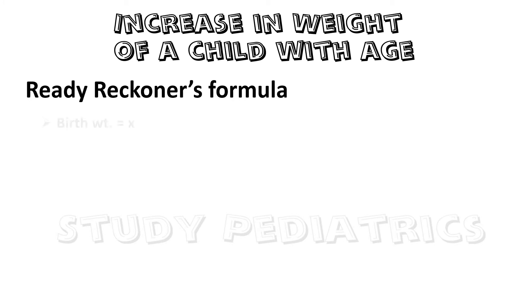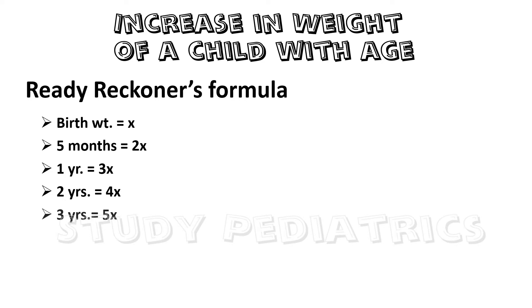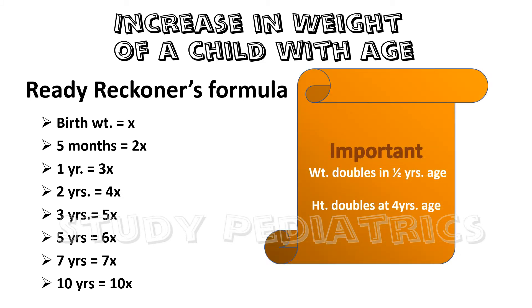Coming to the simple day-to-day Ready Reckoner formula: if birth weight is x, then at 5 months the baby weighs approximately 2x, at 1 year 3x, at 2 years 4x, at 3 years 5x, at 5 years 6x, at 7 years 7x, and at 10 years 10x. This gives a rough estimate of a child's growth with respect to age. Charting growth on a growth chart is the gold standard, but these formulas give an idea of the child's present condition. Do remember that weight doubles in 5 months, whereas height doubles in 4 years — justifying why we take weight for acute cases and height for chronic ones.